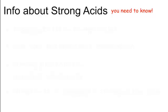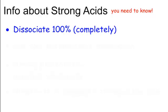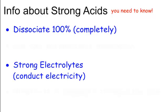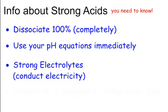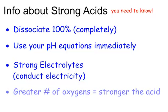Here's some important information about strong acids and bases. First, they dissociate 100% — a strong acid or strong base ionizes completely, making them strong electrolytes. They have free-roaming positive and negative ions — H+ and Cl- if we're talking about hydrochloric acid — and therefore conduct electricity. Use your pH equations immediately with strong acids and strong bases; you don't have to do any equilibrium work. Also, for strong acids specifically, a greater number of oxygens means a stronger acid. So HClO4 is a strong acid, while HClO3 would be a weak acid.